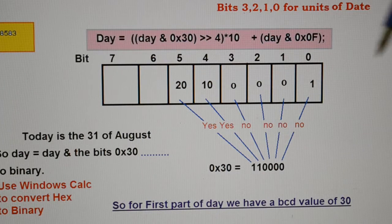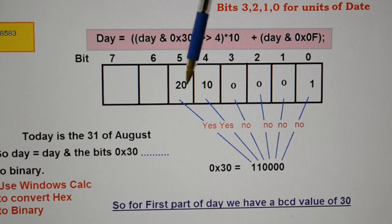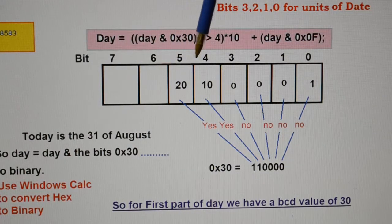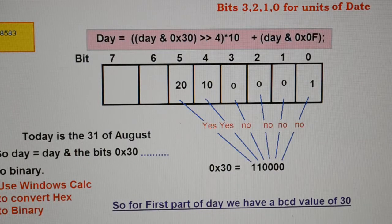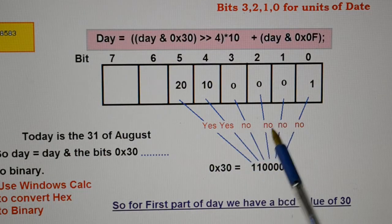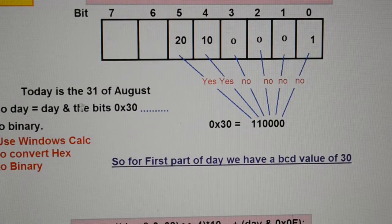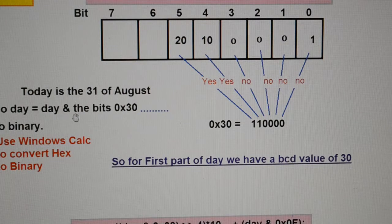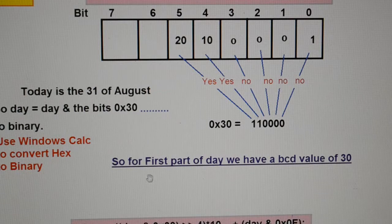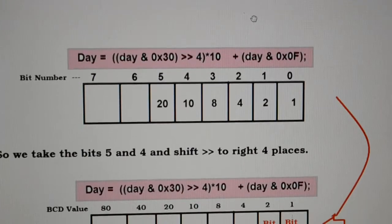So, we've got 0, 0, 0, 0. So, we're interested in these two bits here. Remember the AND as bit-wise. What bits? So, 5 and 4. So, we want that bit and that bit. So, hopefully that makes sense. So, day and bits. I'm actually going to use Windows calculator. So, this first part of the day, we have a BCD value of 30. Right, next.